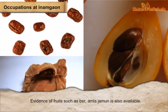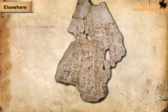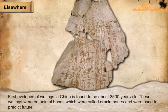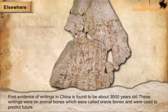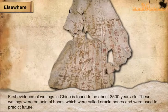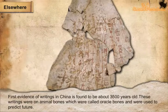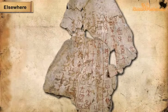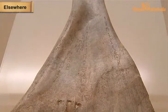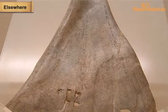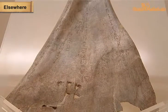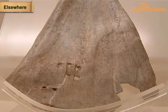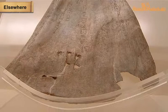Elsewhere. The first evidence of writing in China is found to be about 3,500 years old. These writings were on animal bones, which were called oracle bones, and were used to predict the future. Questions were written on the bones, like 'Would the king win the battle?' or 'Would the harvest be good?' These bones were then put into fire and cracked because of heat. Fortune tellers predicted the future by studying these cracks, but sometimes made mistakes.